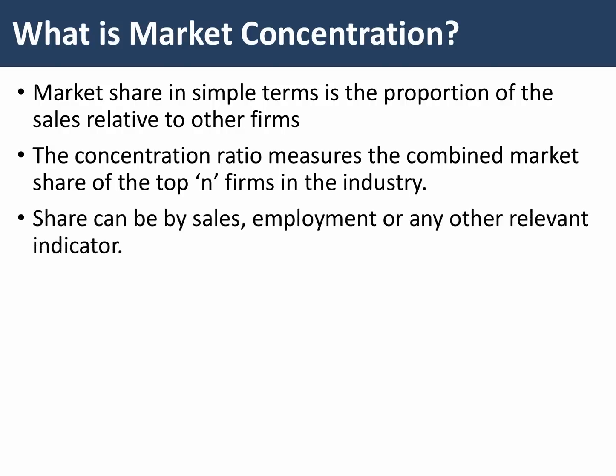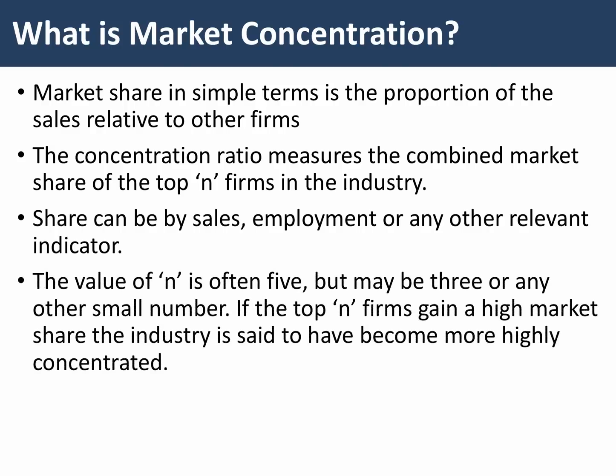Share could be by any metric we choose — it could be by the value of sales, by jobs, or any other relevant indicator. Typically, the data you're given on exams is the percentage of total sales in a market. The value of N can be any number; it's often five, but it could be three or any small number. And if the top N firms have a high market share, the industry has become more highly concentrated.